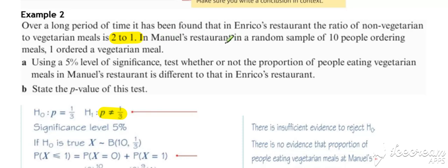In Manuel's restaurant, a random sample of 10 people ordering meals, one ordered a vegetarian meal. So there's a bit of evidence.